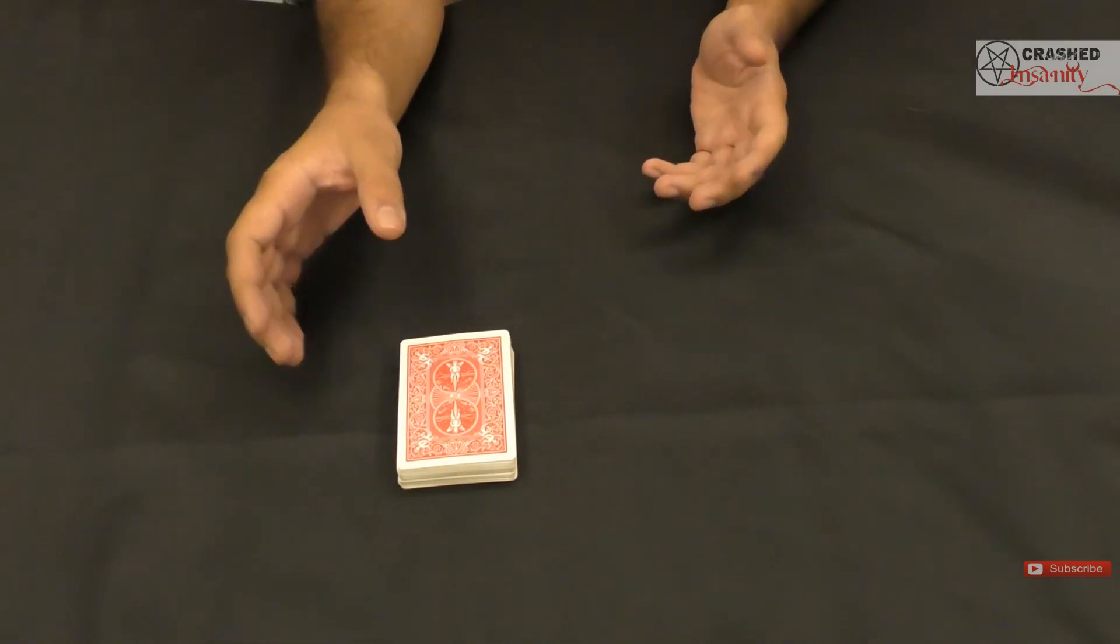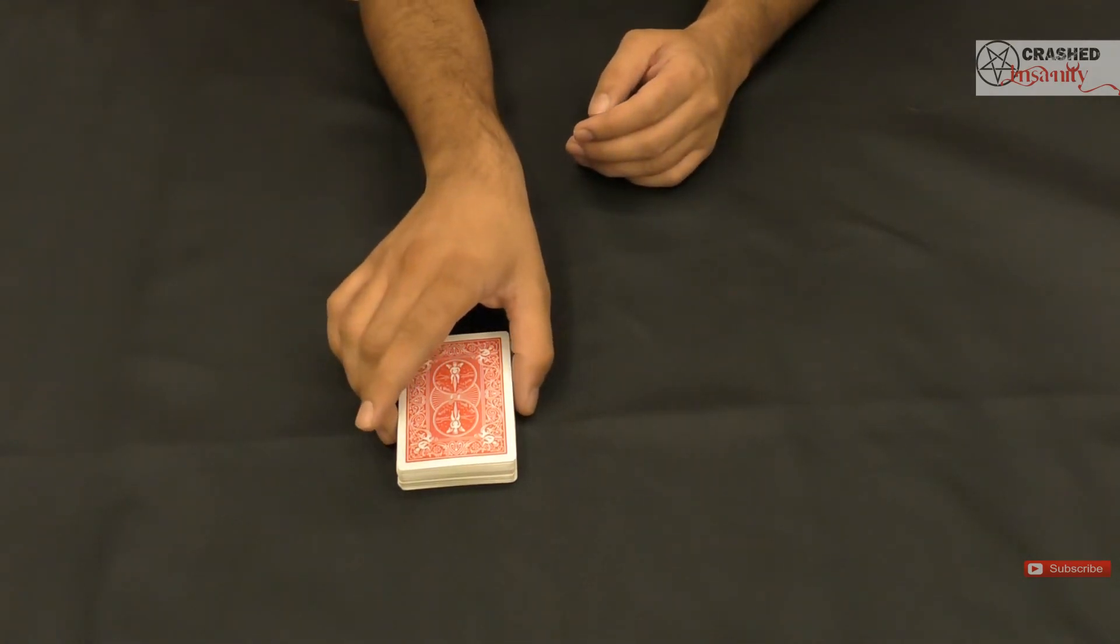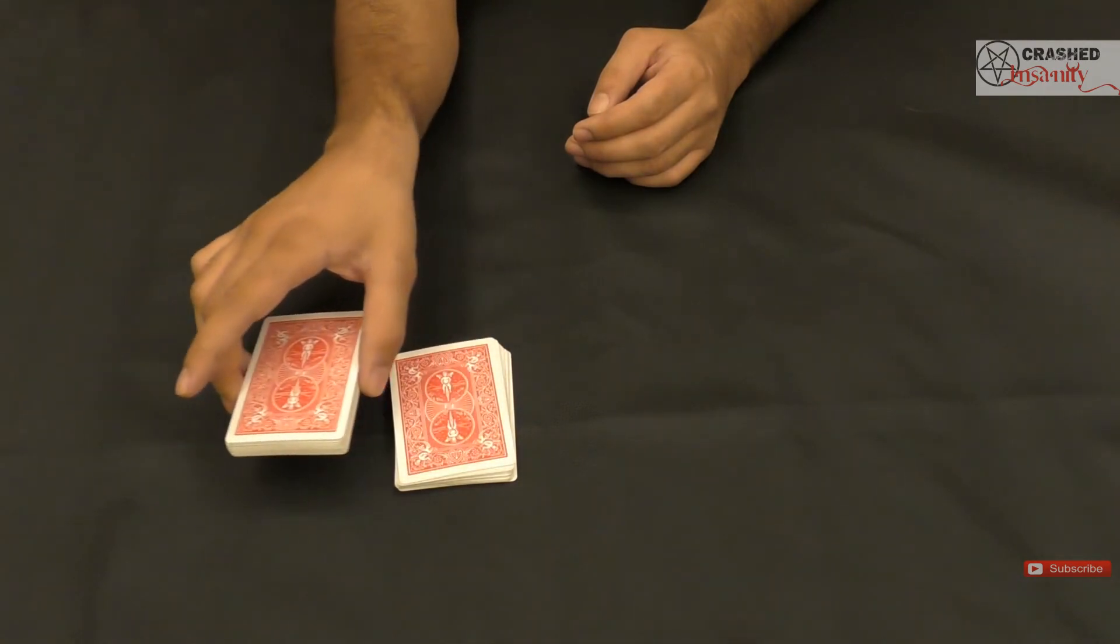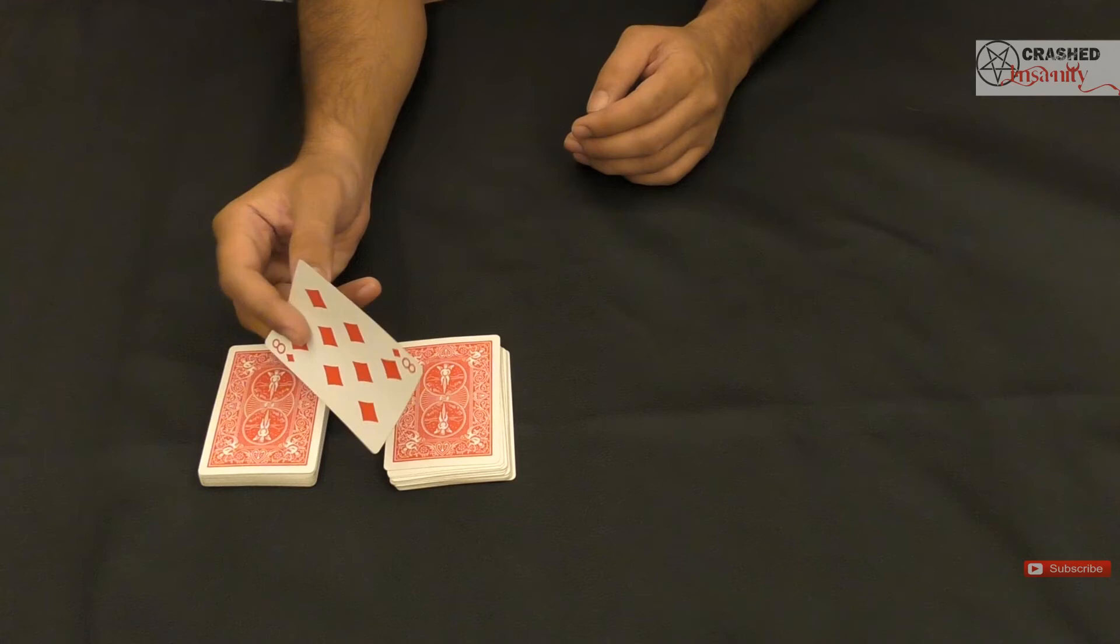Hopefully we'll find the spectator's card. So just by touching, I can know that the card is somewhere here. And just by splitting the deck, this should be the spectator's card—the eight of diamonds.